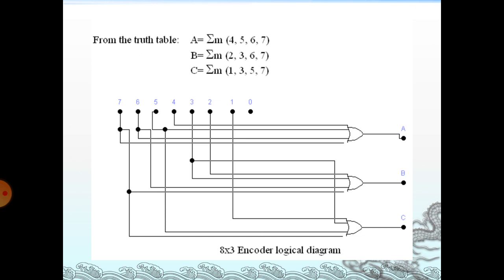From the truth table we can derive the Boolean expressions using K-map. A = Σm(4,5,6,7). B = Σm(2,3,6,7). C = Σm(1,3,5,7). We have 8 inputs 0 to 7. For output A, inputs 4, 5, 6, 7 are given to the OR gate to produce A. For output B, inputs 2, 3, 6, 7 are given to the OR gate to produce B. Similarly for C. This is the 8-to-3 encoder logic diagram.